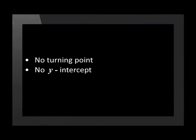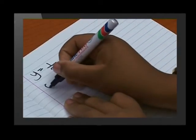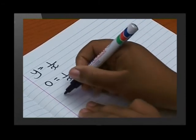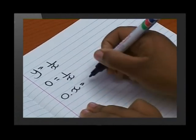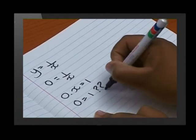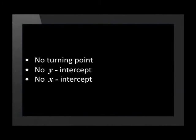You have noticed some important features of this graph. It has no turning point, and the function has no y-intercept because division by 0 is undefined. Now, the last question: does this function have x-intercepts? Well, we get x-intercepts where y is equal to 0. So let's see. I get 0 equals 1 over x. If I multiply through by x, that gives me 0 equals 1. That doesn't make any sense. 0 is not equal to 1. That means that y cannot be equal to 0. That means that the function does not cut the x-axis. That's weird. You really are getting good at this. This function has no x-intercepts, no y-intercepts, and no turning point.